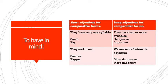On the other hand, long adjectives are the ones that have two or more syllables — for example, 'dangerous' or 'important.' When we have long adjectives like these, we are going to start using 'more' at the beginning, before the adjective. So in this case, we have 'more dangerous' and 'more important.' For example, I can say that snakes are more dangerous than rabbits.